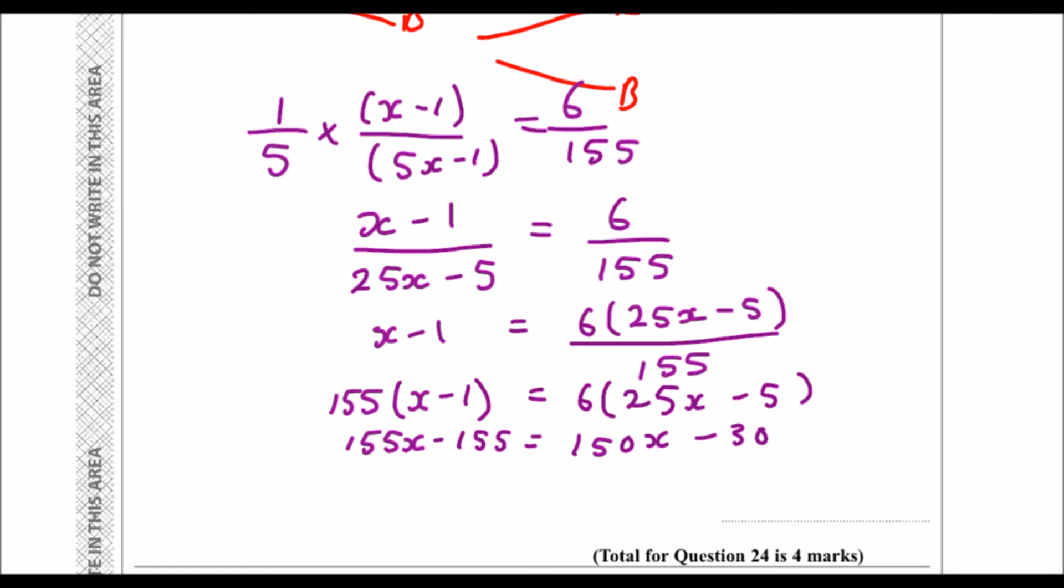Now we're just solving equations, so I want to take the smallest x away. So I'm going to minus 150x from both sides. 5x minus 155 equals minus 30. I'm going to plus 155 to both sides.